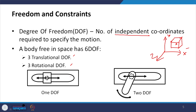For example, a piston constrained in a slot can only move in one direction. This is one degree of freedom — with one independent coordinate we can describe the position of the piston at any time.